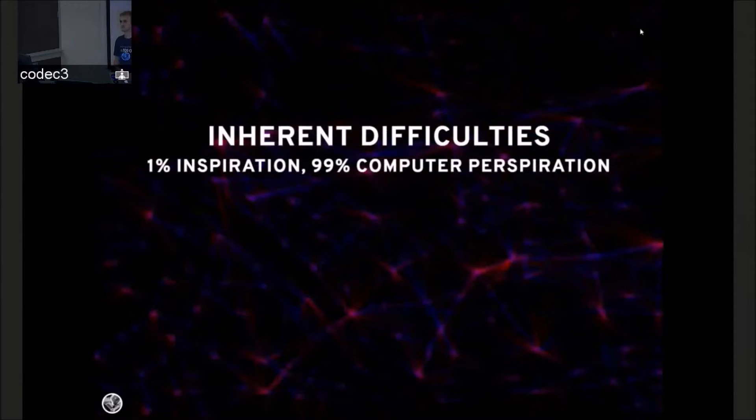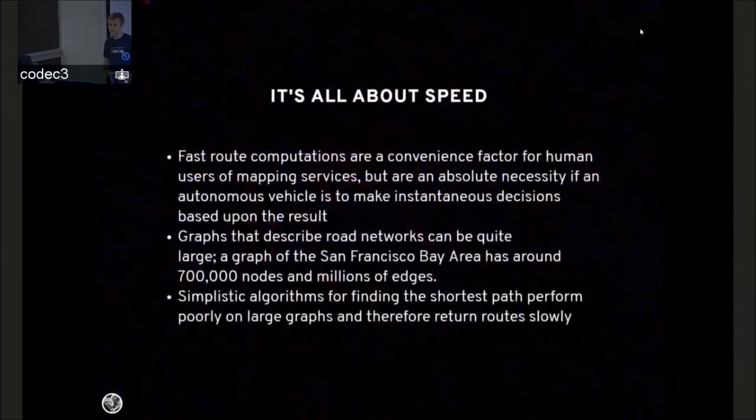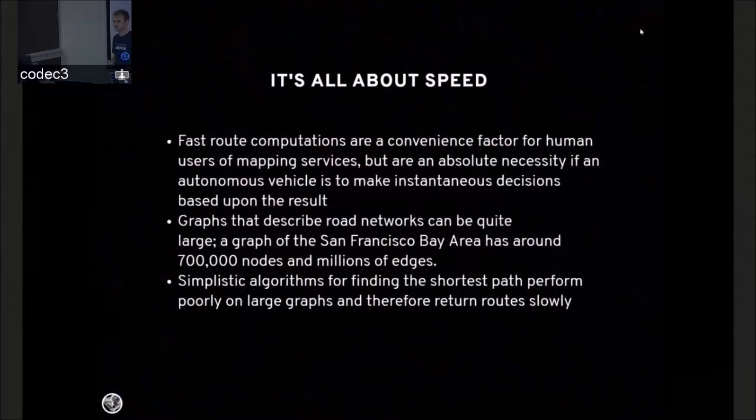But there's some inherent difficulties. It's all about speed. Fast route computations are just nice if you're trying to print off directions from Google Maps. But they're an absolute necessity if a car is going to make a critical decision based upon the result. Also, the graphs are very large. The San Francisco Bay Area graph is upward of 700,000 nodes and multiple millions of edges. Simplistic algorithms for finding the shortest path across such a large graph perform very badly.